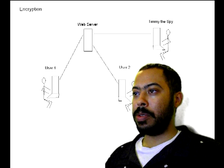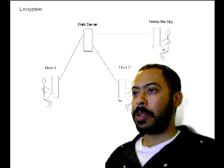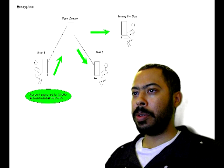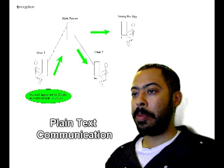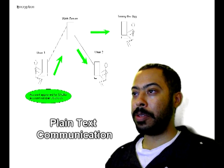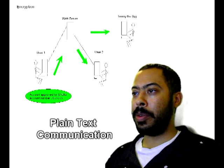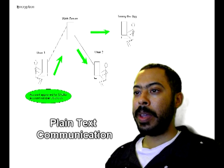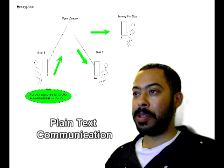Here's our setup: User 1 and User 2 are communicating back and forth. User 1 uploads account approvals, maximum amounts approved, and account numbers to what he believes is a secure web server. However, it's not secure — Timmy the spy can also download that information. The data is uploaded in plain text, because that's how User 2 is going to read it.